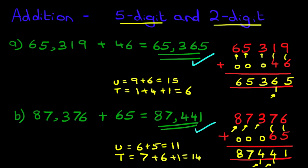And that is how we do addition of a 5-digit number and a 2-digit number. Always remember, if you're going to rewrite the question from the horizontal format into the vertical format, make sure you write it in nice, neat columns.